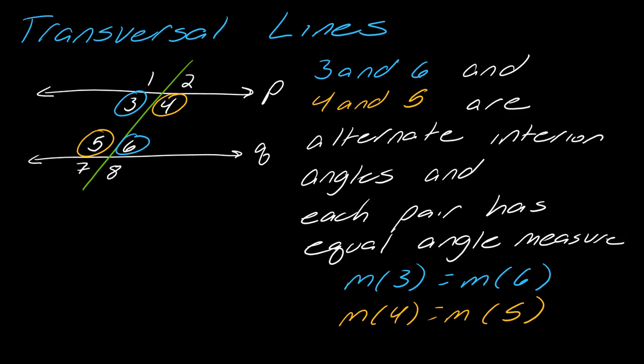So first pair, three and six and four and five. These are what are known as alternate interior angles and each pair has equal angle measure. So three and six are equal in measure as are four and five.